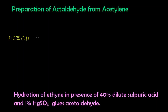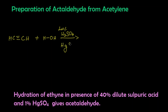Let's write the structure of acetylene: HC triple bond CH. We are going to add a water molecule — that is H and OH — in the presence of 40% sulfuric acid (H₂SO₄) and 1% mercuric sulfate (HgSO₄).